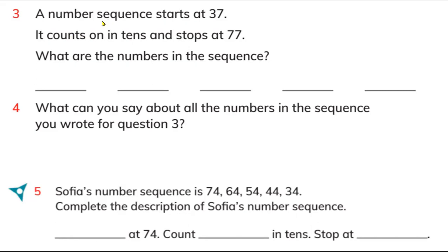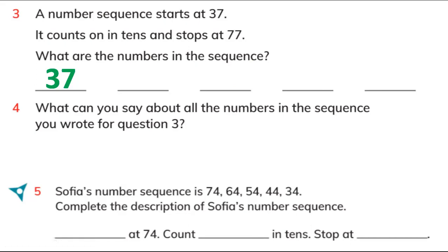Our sequence starts from 37, so the first blank is 37. You have to count on in tens and stop at 77 — your last number should be 77. We have to find three numbers in between, because 37 is the start number and 77 is the last number.